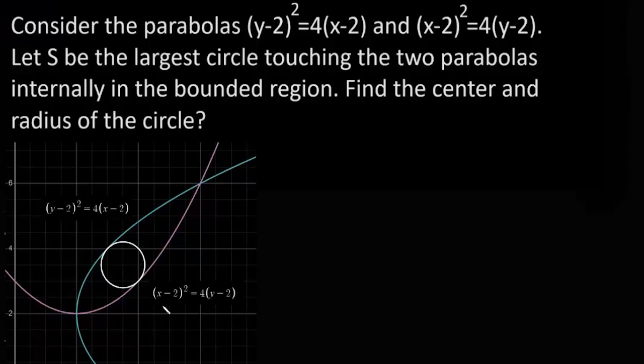We have already drawn the two parabolas. This pink parabola is (x-2)² = 4(y-2) and this parabola in blue is (y-2)² = 4(x-2) and we have to find center and radius of this largest circle touching the two parabolas internally in the bounded region.